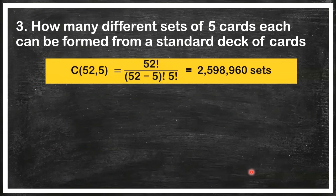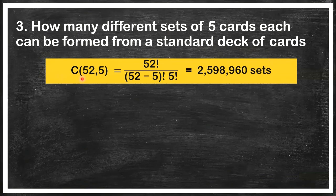Third example: a standard deck of cards — ito yung nilalaro yung baraha — has 52 pieces. So N = 52, and out of those 52 cards, we're going to choose 5. Hindi nagmamatter yung order nila, so it's a combination problem.